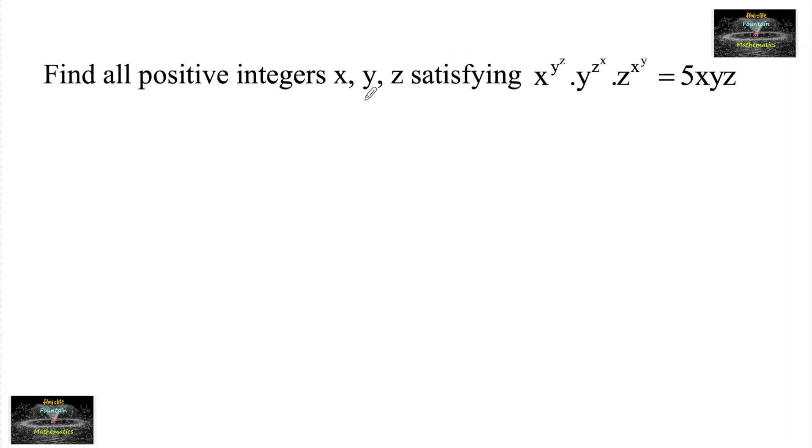Find all positive integers x, y, z satisfying x to the power of y to the power of z times y to the power of z to the power of x times z to the power of x to the power of y equals 5xyz.